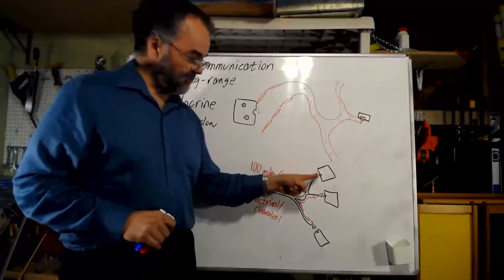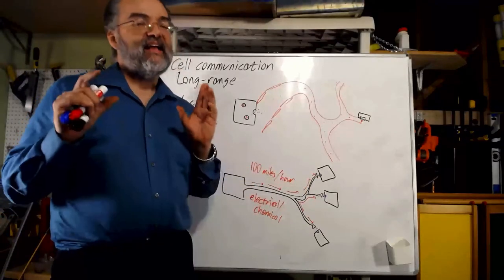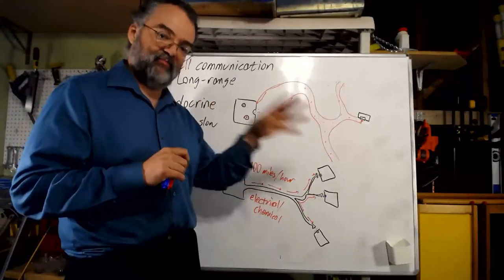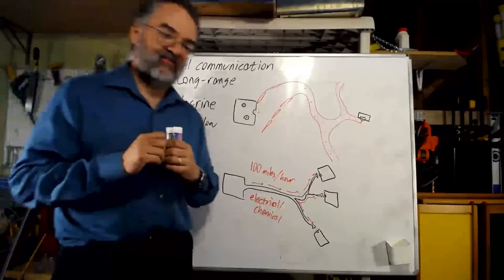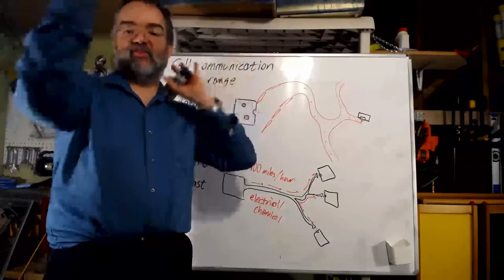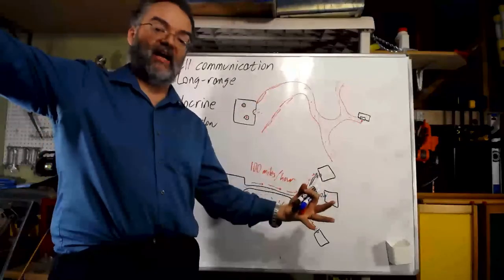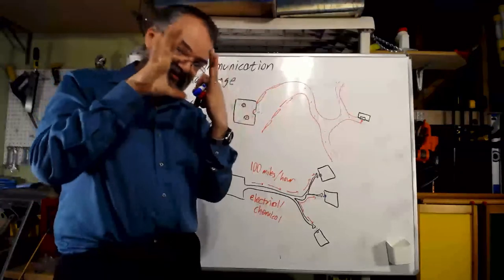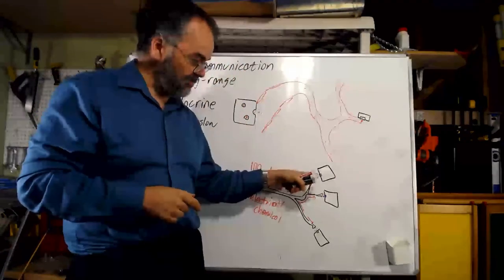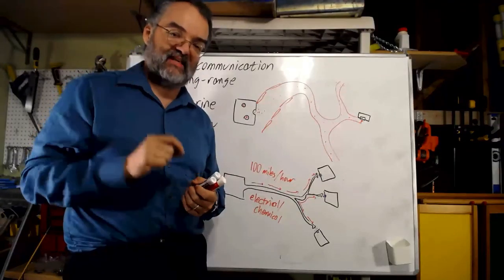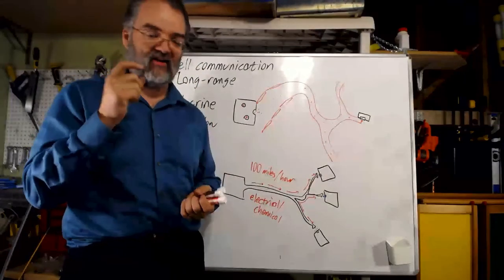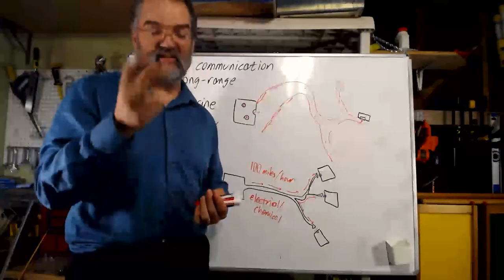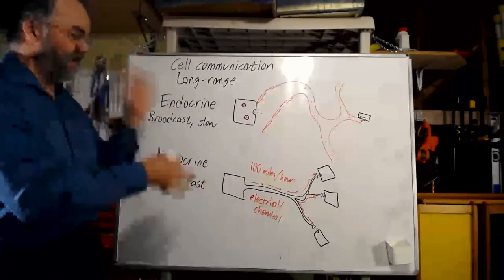Neurocrine signaling is fast and very specific, but it can't be changed quickly — if this cell wants to send a signal to different cells, it has to grow that physical connection, which does not happen easily. Any cell can put out a receptor and receive a hormone, but growing new neurocrine connections is hard. The key difference from paracrine is the extreme closeness of the release site to the target — the distance can only really be seen with a good electron microscope, a couple dozen atomic widths, which is why it can be so targeted.